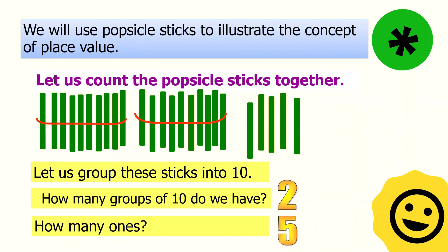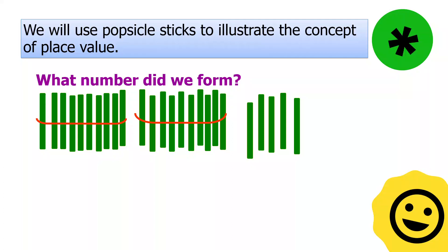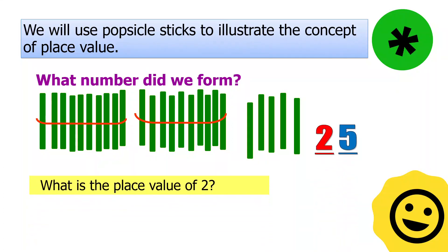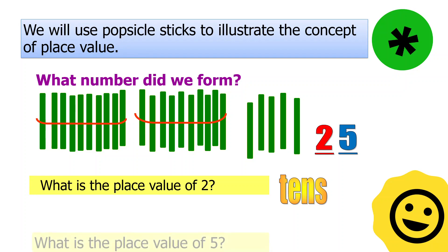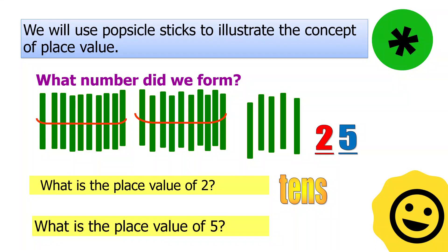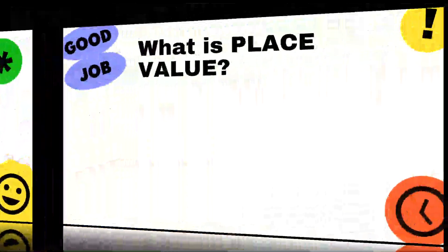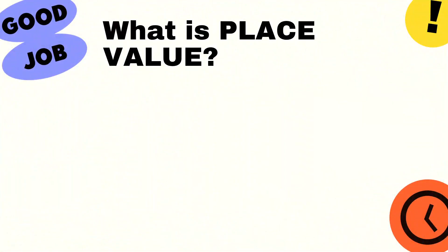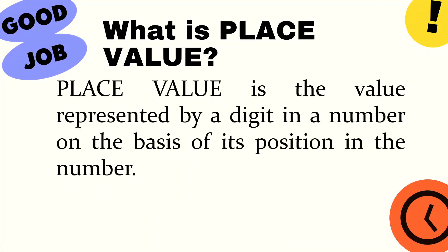All right. So what is the number that we form? It's 25. Now, what is the place value of 5? And what is the place value of 2? It's tens, because we have 2 groups of 10s. So the place value of 2 is tens.